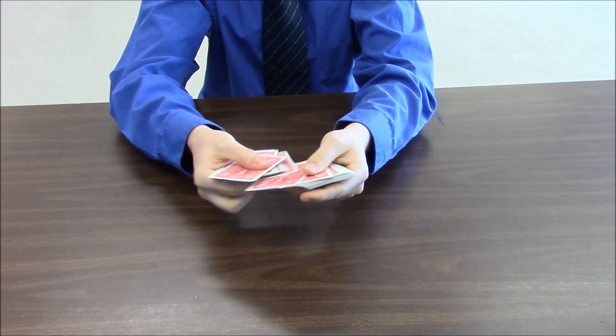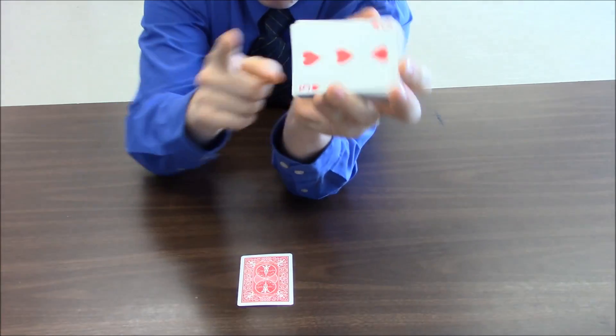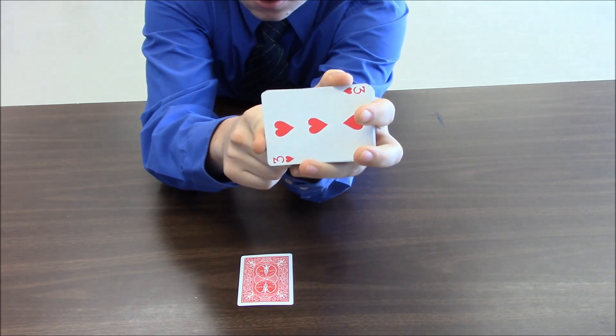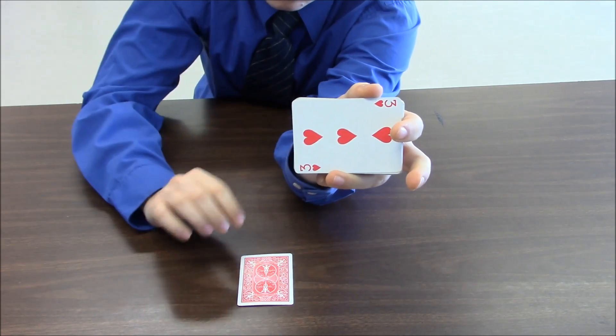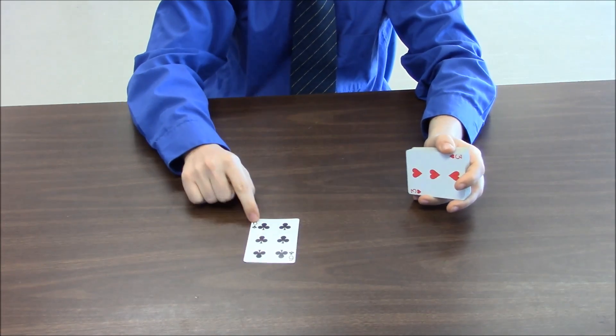But now say someone chooses the card, take a peek at the bottom card being three of hearts. So what should the next card be? The six of clubs.